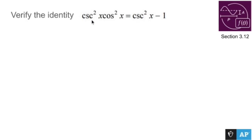Verify the identity csc²x·cos²x = csc²x - 1. I'll start with the left side and do a little math trickery to see if I can end up with the right side.